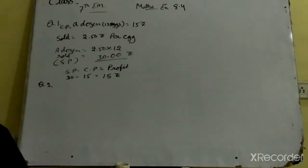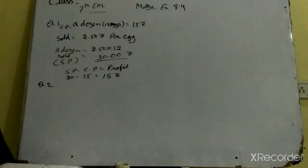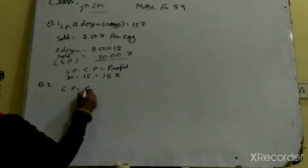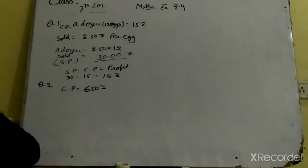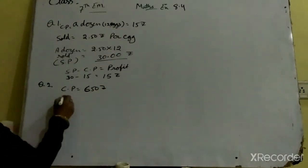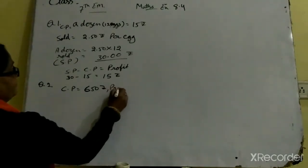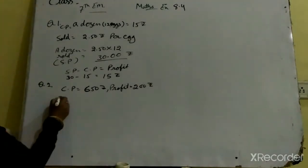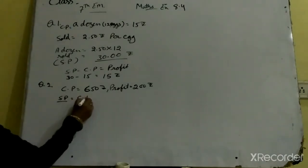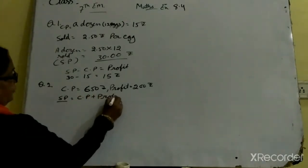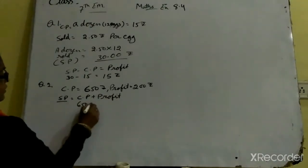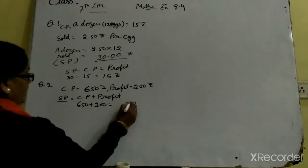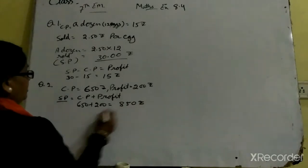Question number 2 dekhiye. A chair costs rupees 650 — yani CP hai uski 650. And at a profit of rupees 200 — profit bata raha hai 200 rupees. To what is the selling price? SP = CP plus profit, yani 650 plus 200 = 850 rupees.